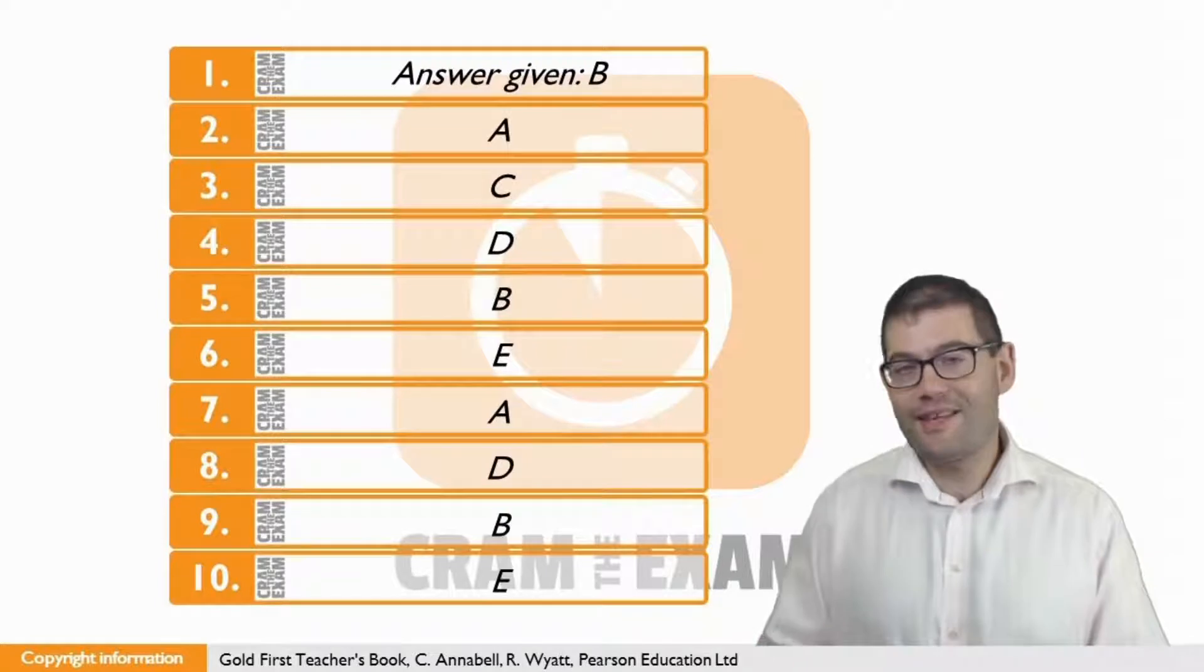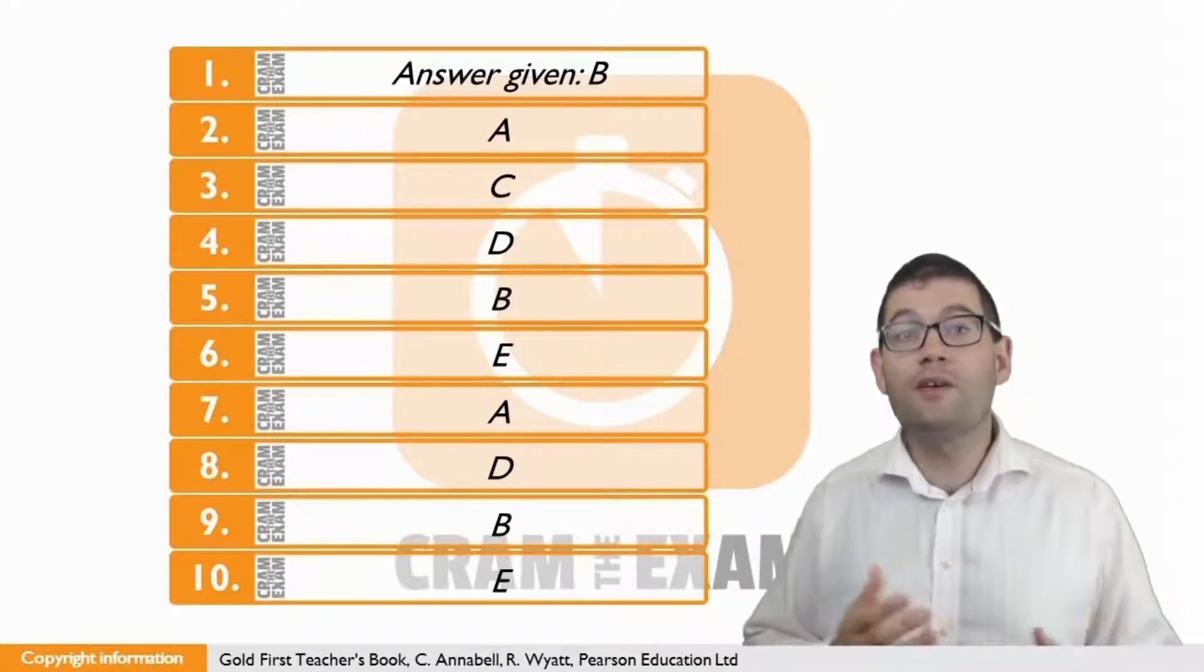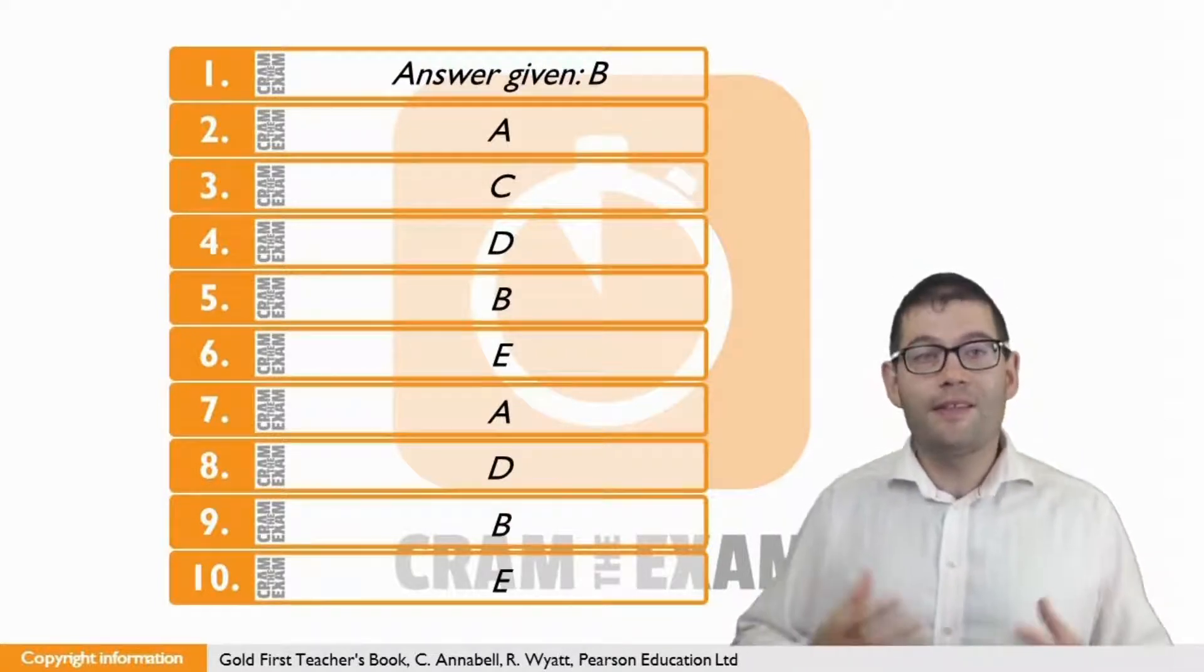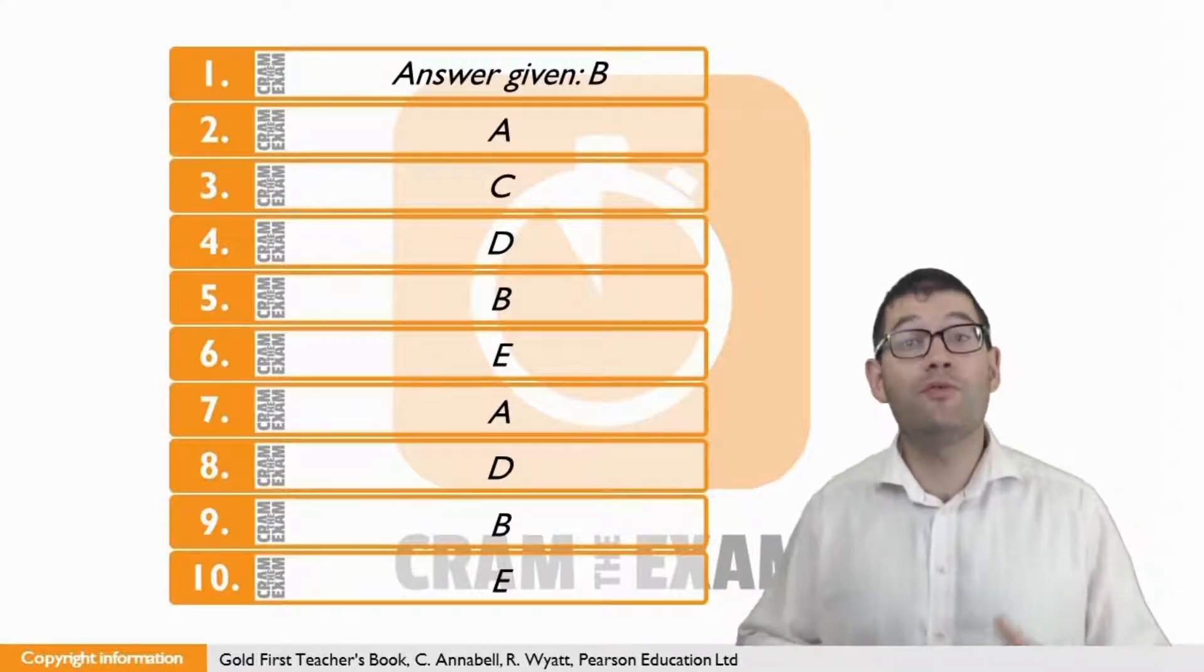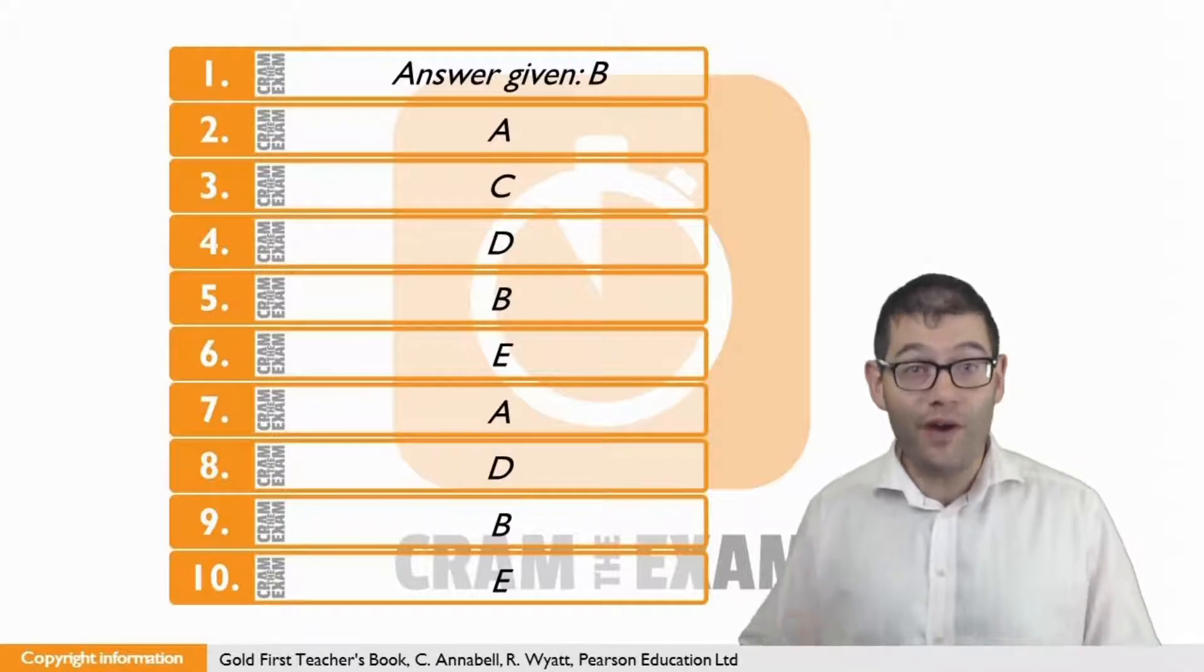For question three, the answer is C. Jonathan decided to live abroad because it was too expensive. The idea of less expensive in question three can be found in C, two-thirds of the way down, with for far less. The context here is about money.